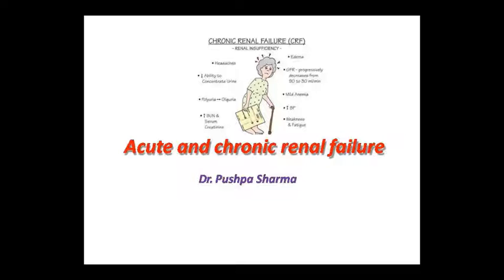Acute renal failure is a syndrome characterized by a rapid onset of renal dysfunction caused by obstruction, poor circulation, or underlying kidney disease. It is usually reversible with treatment, but if not treated, may progress to end-stage renal disease and death. Chronic renal failure is a syndrome characterized by progressive and irreversible deterioration of renal function, with rapidly progressive destruction of nephrons, eventually terminating in death.